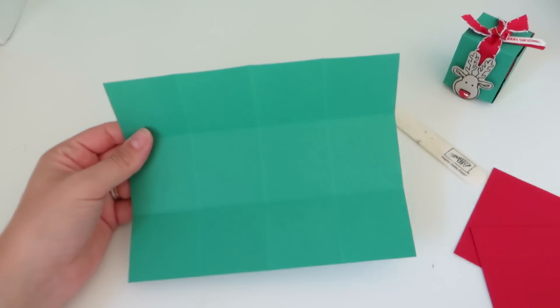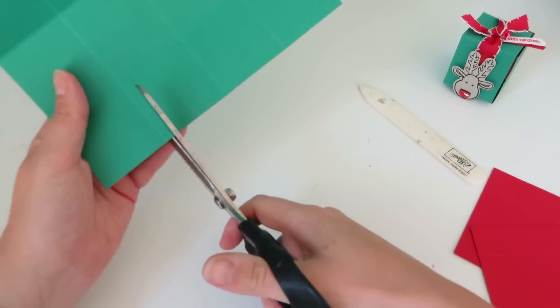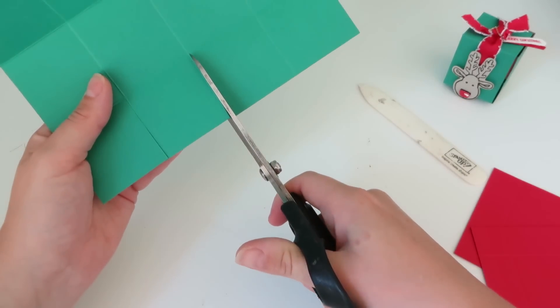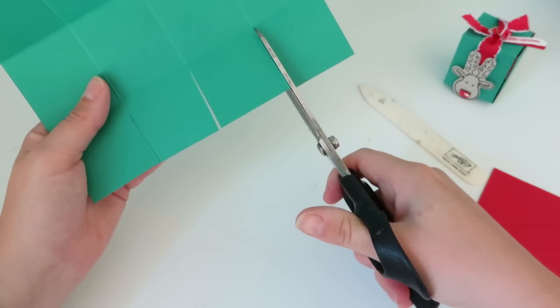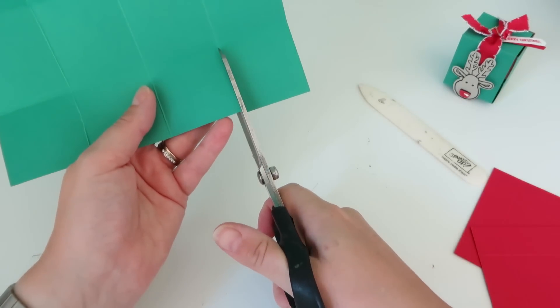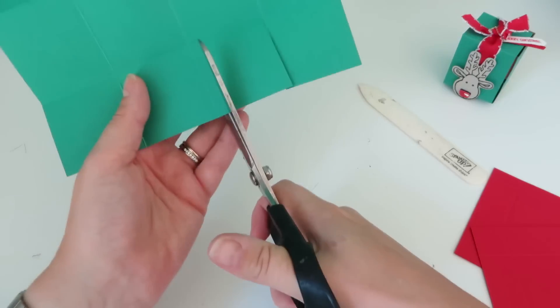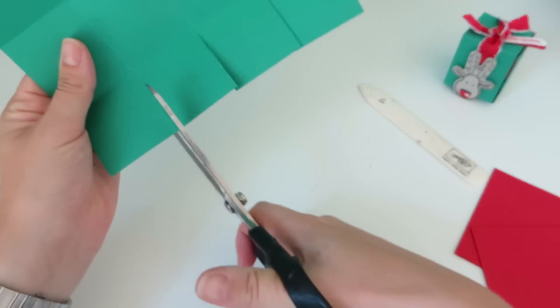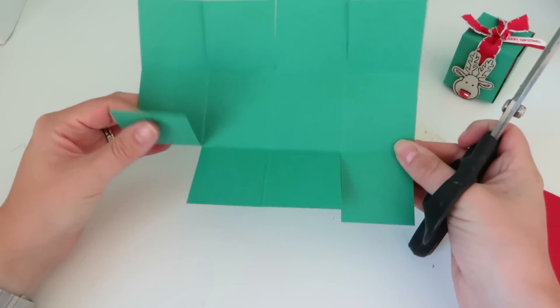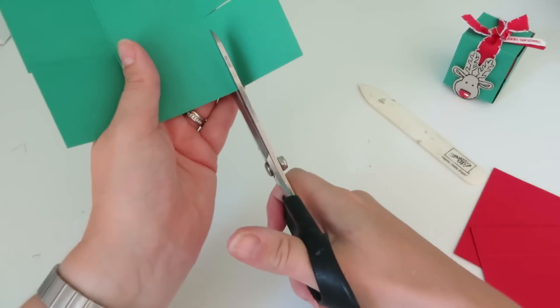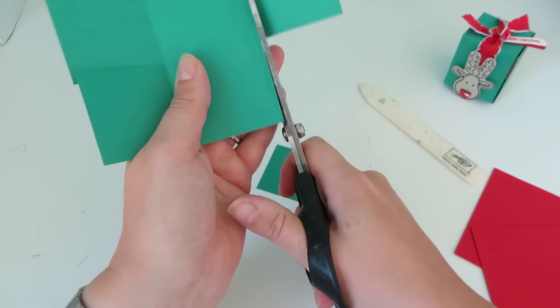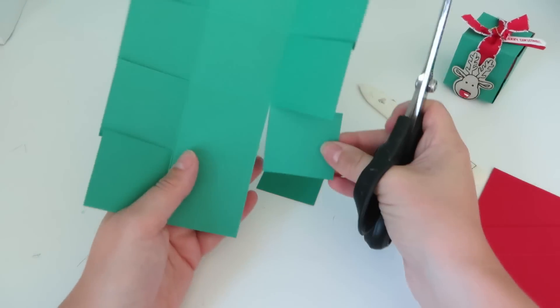Then what we are going to do is we are going to cut up each of the score lines we made at 2 inch intervals along the long side. So cut those up on both sides. And then on one side, we are going to cut off the two of them. So just cut those off.